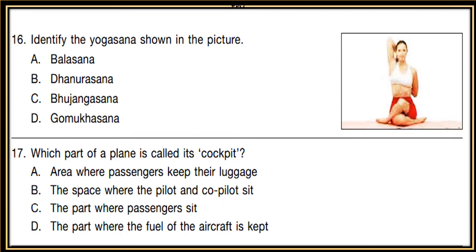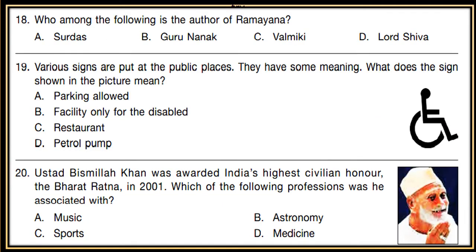Question 17: Which part of a plane is called its cockpit? Options: the area where passengers keep their luggage, the space where the pilot and co-pilot sit, the part where passengers sit, or the part where the fuel is kept. Question 18: Who is the author of the Ramayana? Options: Surdas, Guru Nanak, Valmiki, or Lord Shiva.